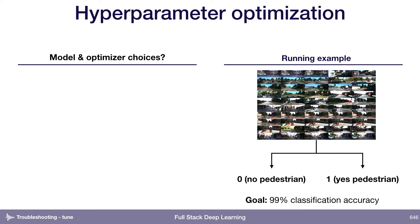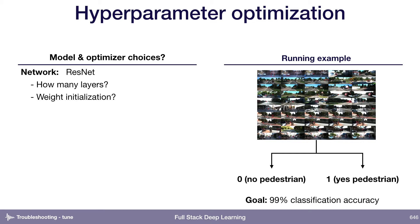The challenging thing about hyperparameter optimization is that there's a ton of different hyperparameters that you could tune. Let's say that we've decided to use a ResNet — well, that choice of network is itself a hyperparameter. Even within a ResNet, how many layers should we use? What weight initialization scheme? What kernel size for our convolutional kernels?